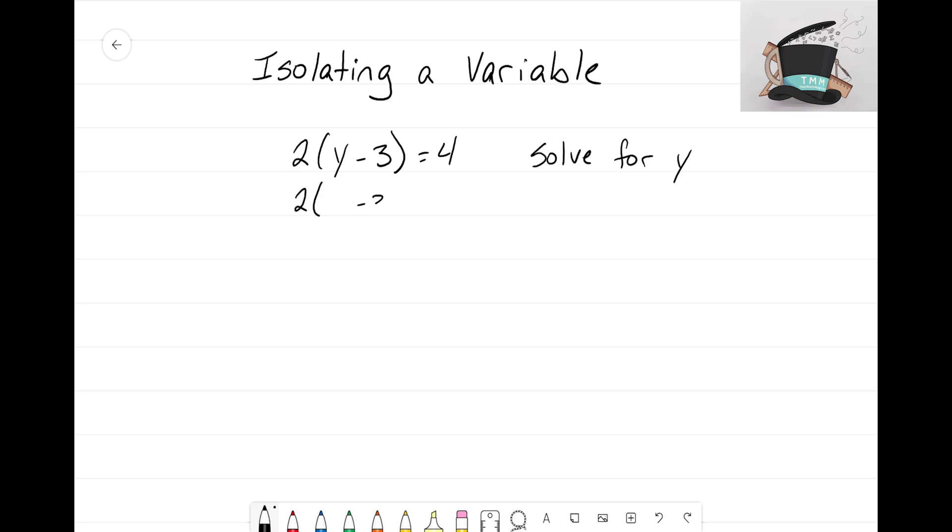First thing that I always do when I'm dealing with isolating a variable is I always rewrite the equation and I write the variable that I want by itself in another color so I can see how I'm going to get it by itself.